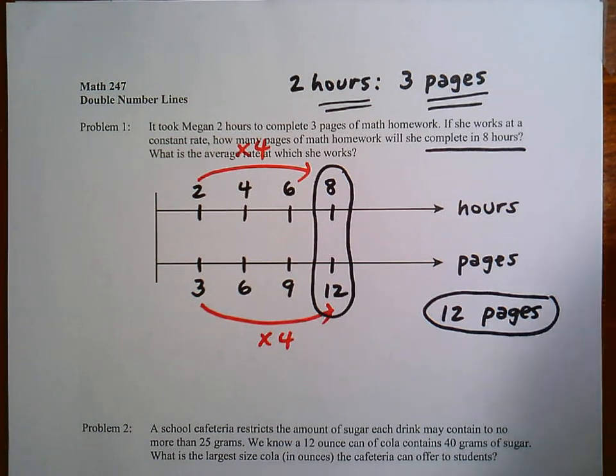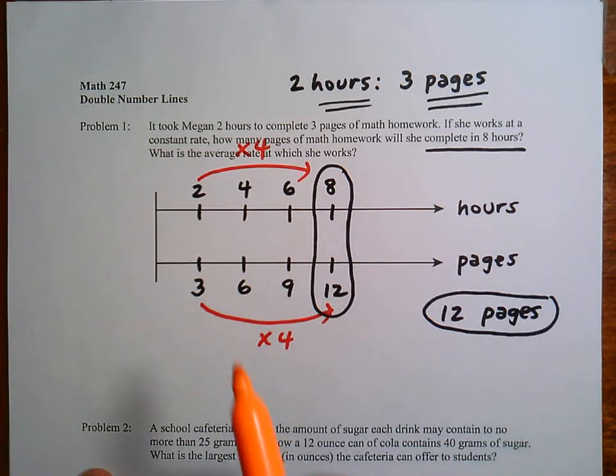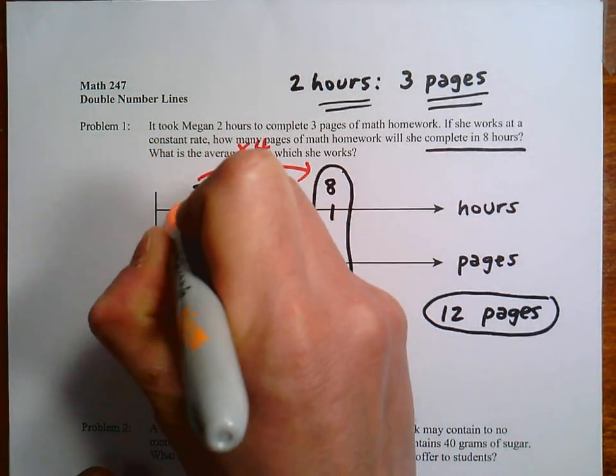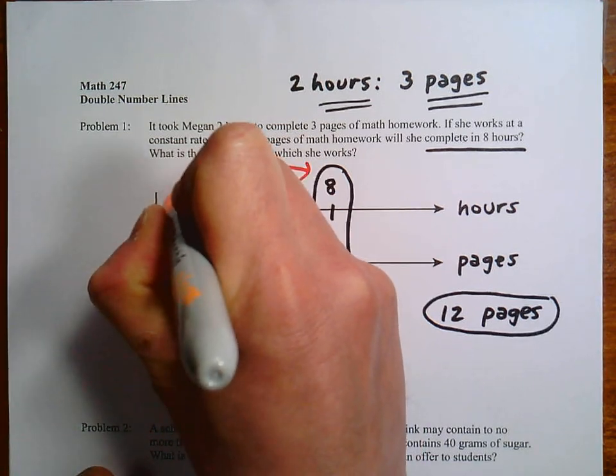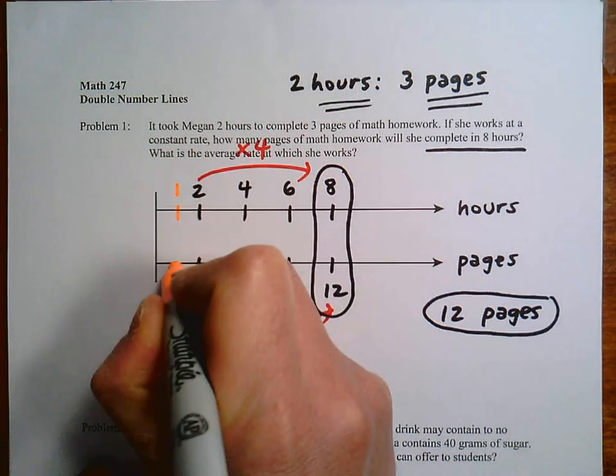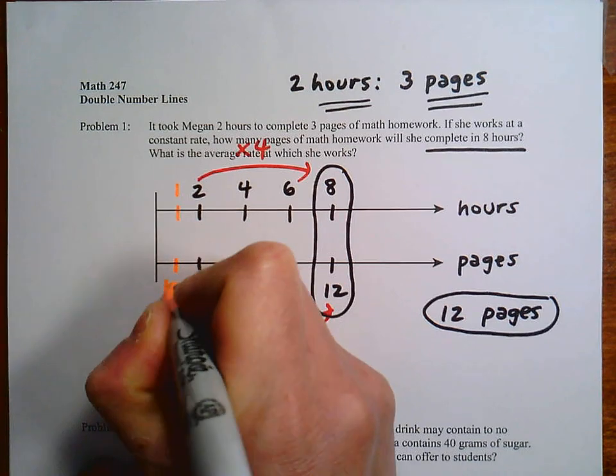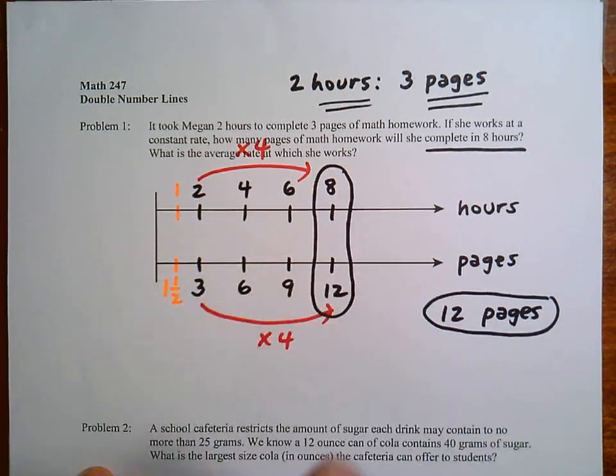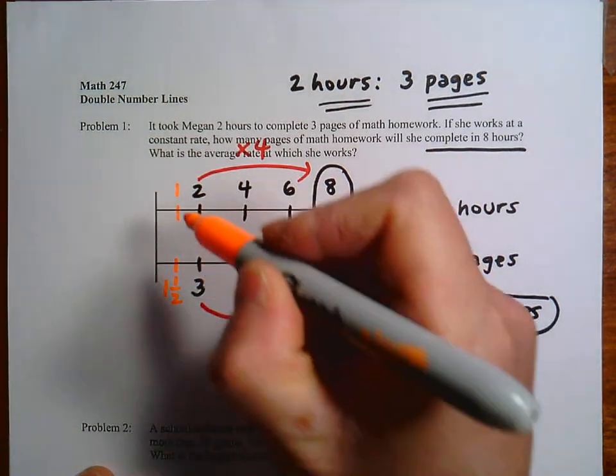Another thing I'll point out here, what's the average rate at which she works? So this is connecting to last week when we talked about unit rate. So if we look at the 2 here, it's pretty easy to find the midpoint. We have 1 there. And then we'd also have to find the midpoint here, which would be 1.5, right in the middle of 3.